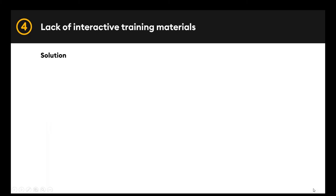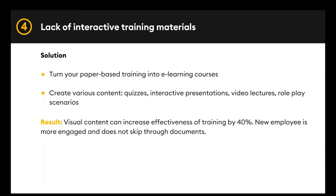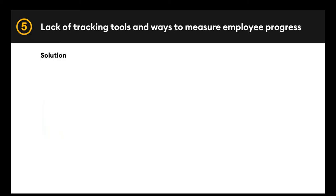The next challenge is the lack of interactive training materials, which many of you voted as the main challenge. With the help of an authoring tool, formal documentation can be converted into e-learning courses that are visually appealing to learners. According to studies, approximately 65% of people are visual learners, and adding visual instruction to written text can increase the effectiveness of training by 40%. Visualization of content helps increase understanding and improves retention. Our clients used an authoring tool to turn paper-based reading materials into easy-to-follow interactive courses, how-to videos, and online quizzes.